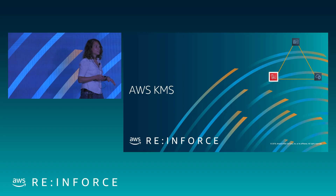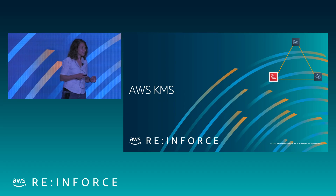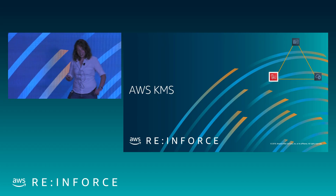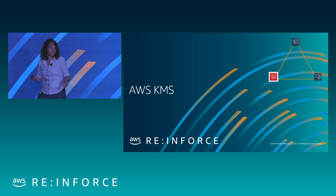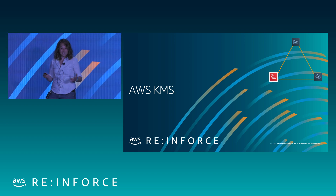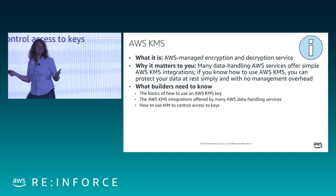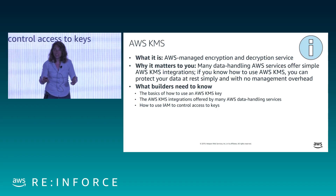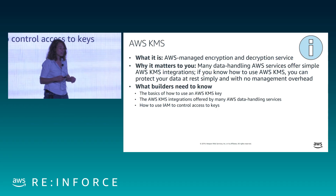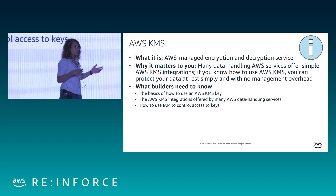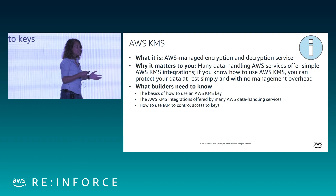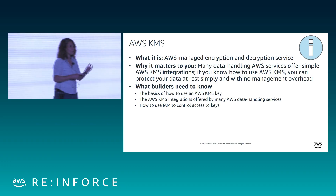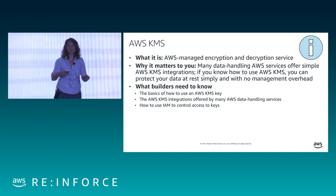Let's talk about your data. Because you're security people, you know you should be encrypting your data. Our service for doing that is called KMS — Key Management Service. KMS 411: it encrypts and decrypts. That's what it does all day long. And you don't even need to know the mechanics, because about 50 AWS services have integrations with KMS where you can use KMS to encrypt your data and the service takes care of all the mechanics for you.